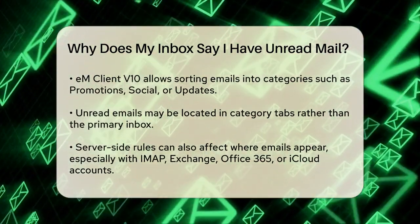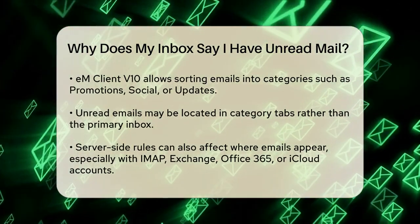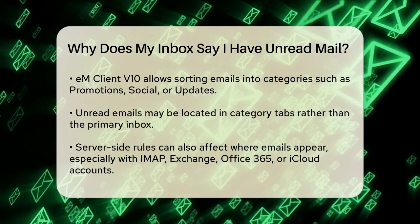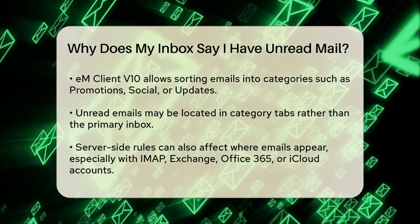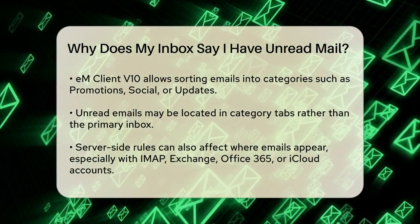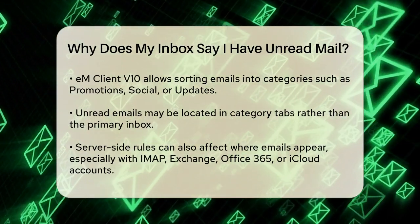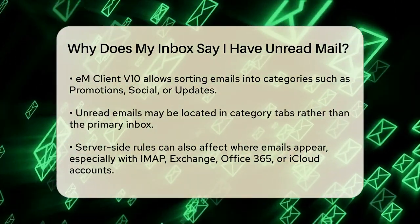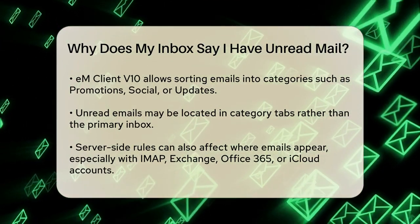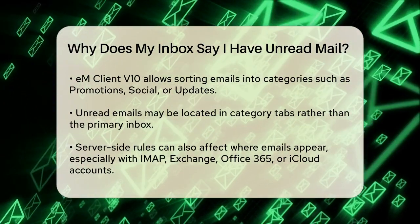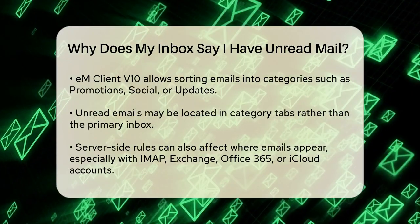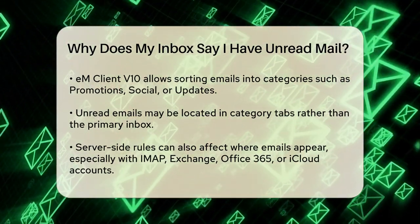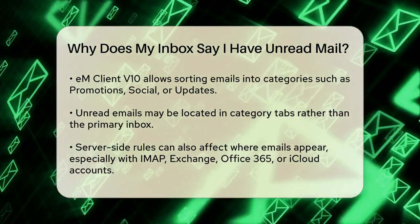Another reason could be the use of categories. In EM Client V10, for instance, emails can be sorted into different categories like Promotions, Social, Updates, or Other. If these categories are enabled, your unread emails might be showing up in one of these categories instead of your primary inbox. To check this, you can look on the right side of your primary inbox and click on the Other Category tabs to see if those unread emails are there.